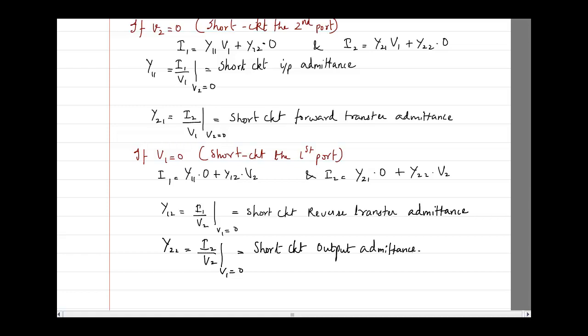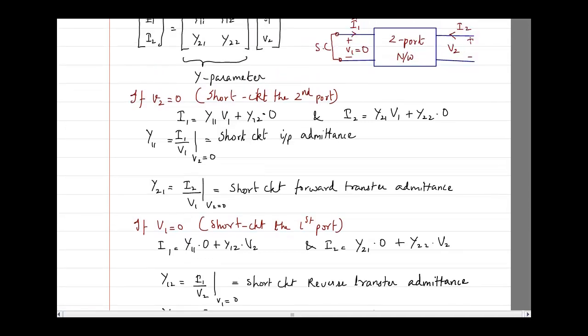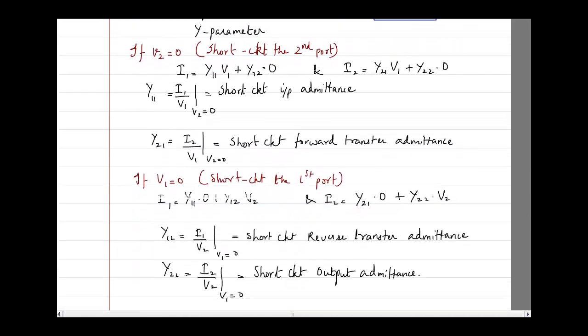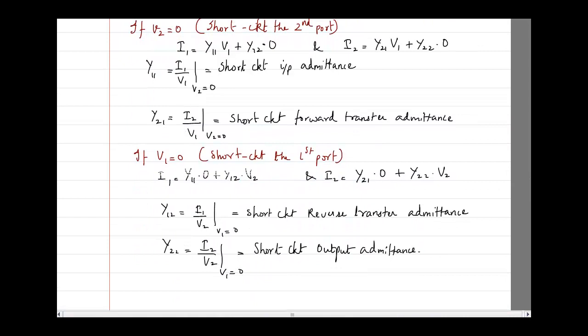And Y22 = I2/V2 when the input port V1 = 0. It is the same output port for which we are finding out this admittance, so we call it the short circuit output admittance. These are the four Y parameters of any circuit.